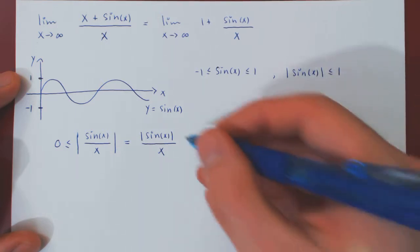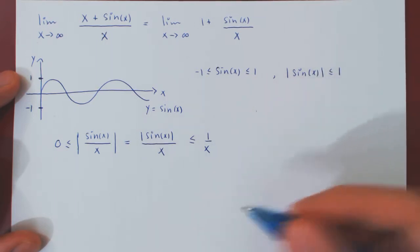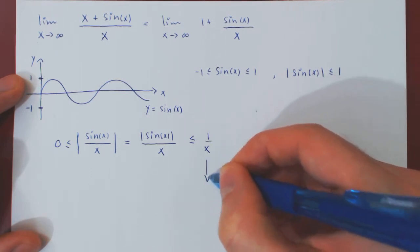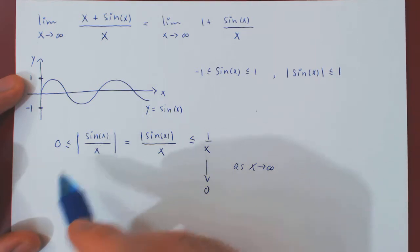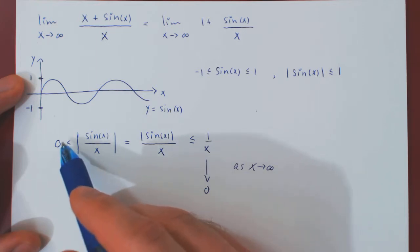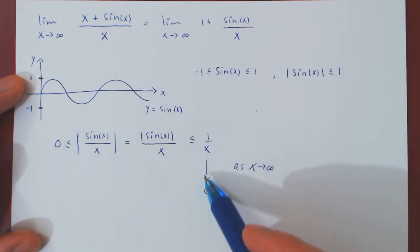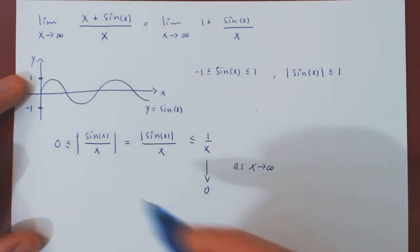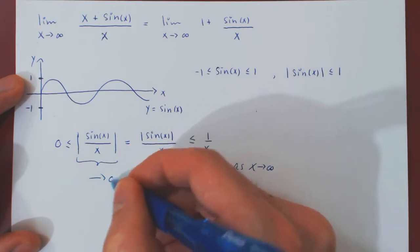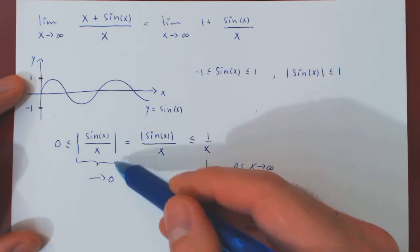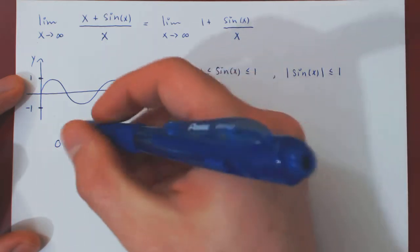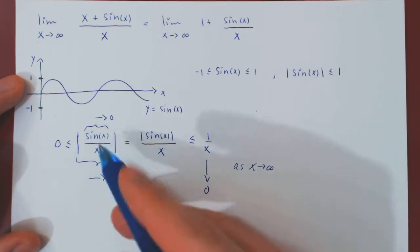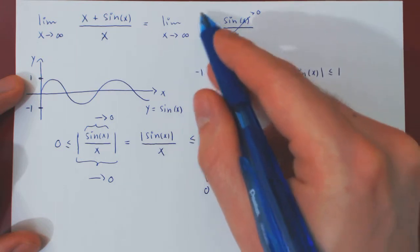And then we can use our upper bound. The absolute value of sine of x is at most 1. So, this is at most 1 over x. And now, as x tends to infinity, 1 over x converges to 0. And so, you see, in absolute value, sine of x over x is at least 0. But the upper bound is shrinking to 0. So, in the limit, sine of x over x in absolute value is squeezed between 0 and 0. So, it has nowhere else to go. It must converge to 0. But, if the absolute value of an expression shrinks to 0, the expression itself must shrink to 0. So, our intuition was correct. By the squeeze theorem, sine of x over x does shrink to 0. And the limit, therefore, is simply equal to 1.